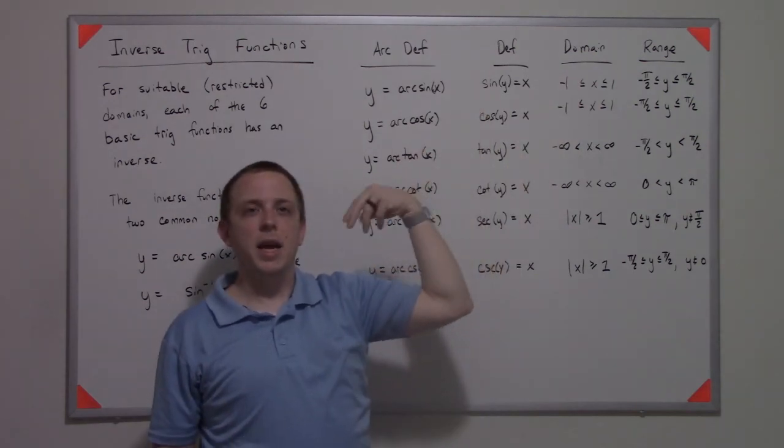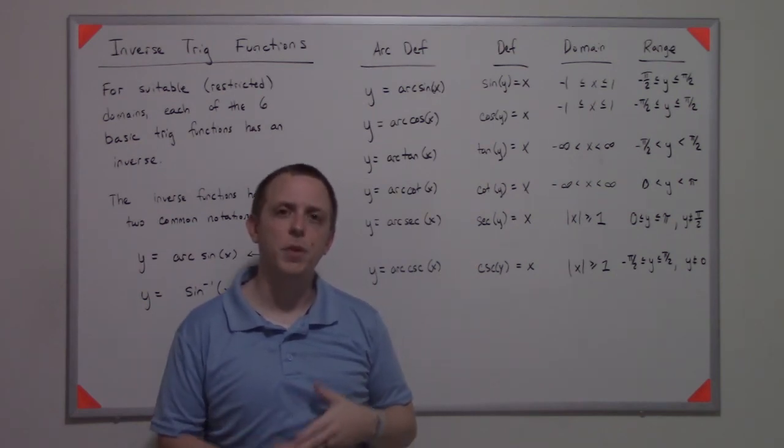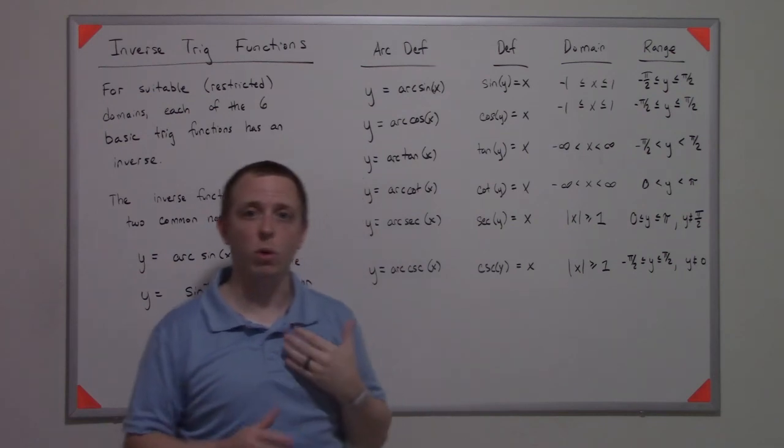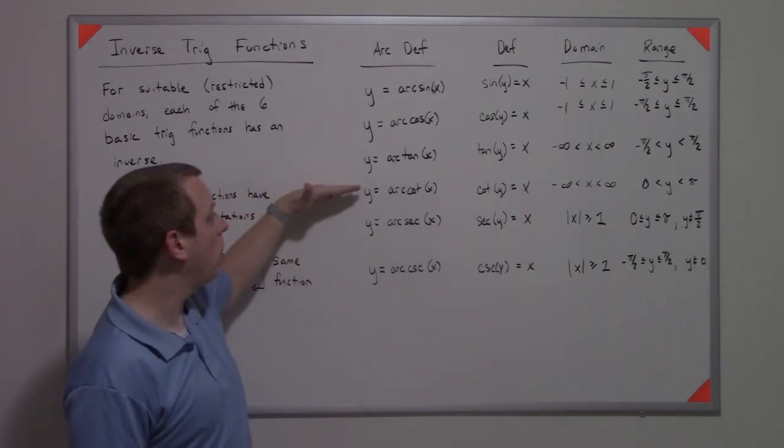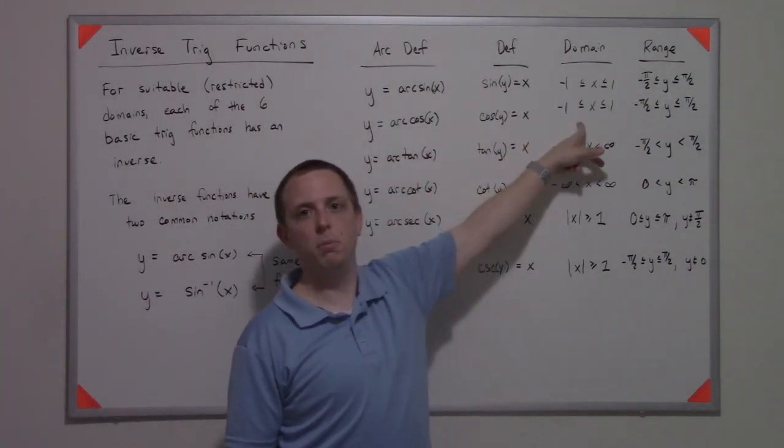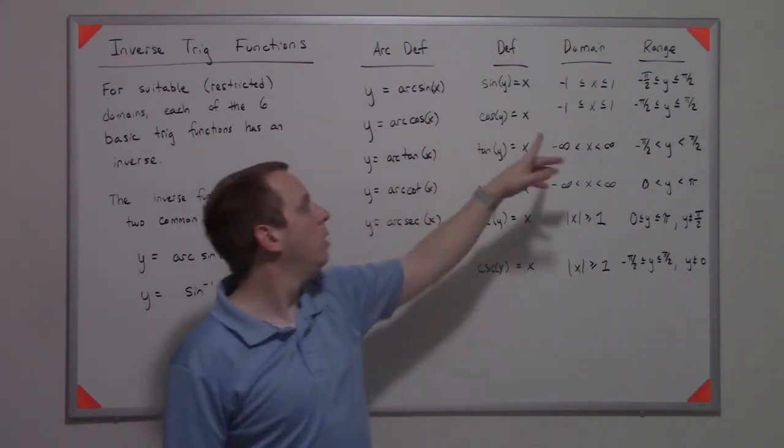The same exact relationship holds for all the other five remaining trig functions: arc cosine, arc tangent, arc cotangent, and so on. The arc cosine has the same sort of domain because cosine has the same output, but its range is also negative π over two to π over two.